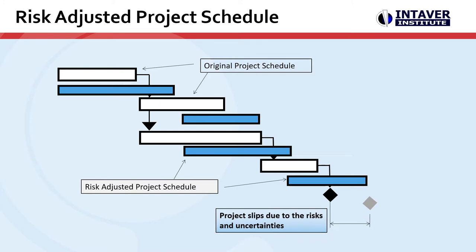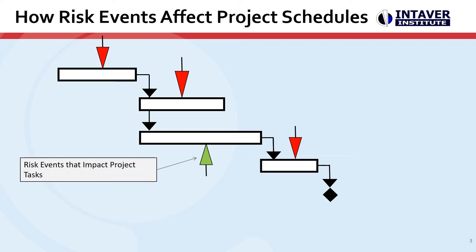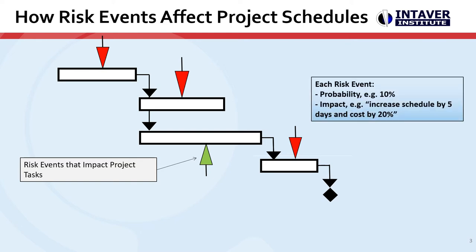Now let's take a look at how we can assign risk to a project schedule. Risk events can be assigned to your project schedule. The arrows represent risk events that have been assigned to activities and can be threats or opportunities. Risk event assignment includes probability and impact. For example, if a risk occurs with a 10% probability, it could cause a delay of 5 days and a cost increase.